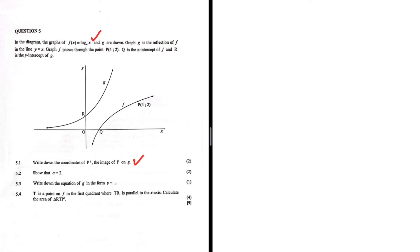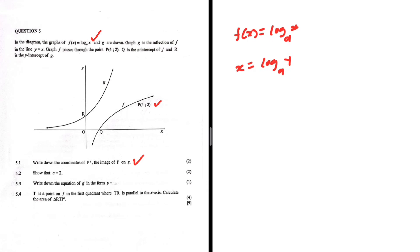So f(x) = log_a(x), and g is a reflection of f in the line y = x. For g, we have x = log_a(y), so g is the inverse of f. We need to deduce that first. Graph f passes through point P with coordinates (4, 2), as we can clearly see. Q is the x-intercept of f and R is the y-intercept of g.